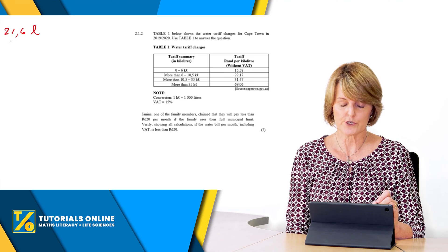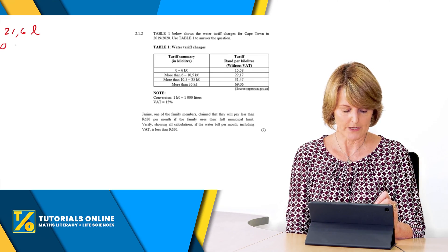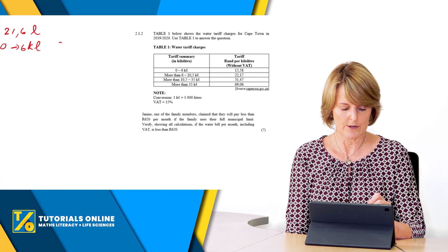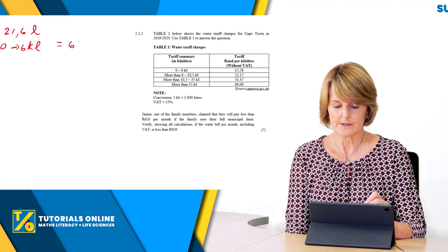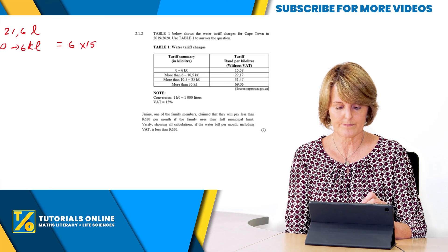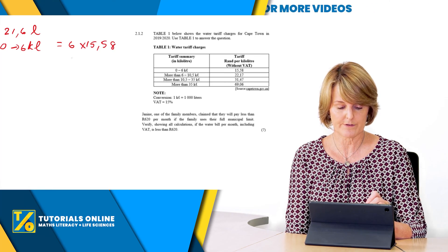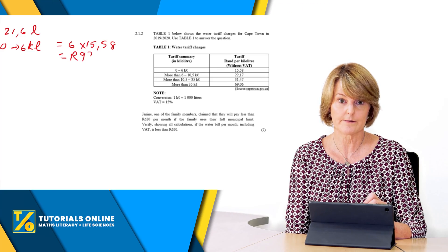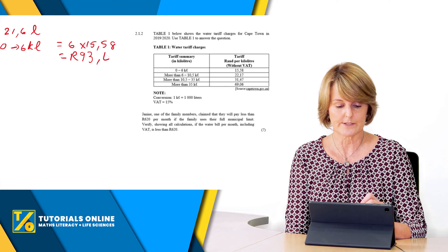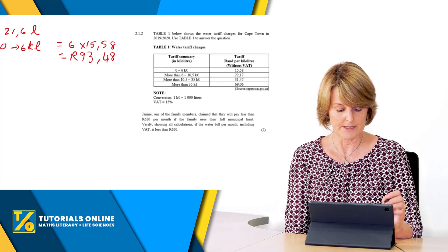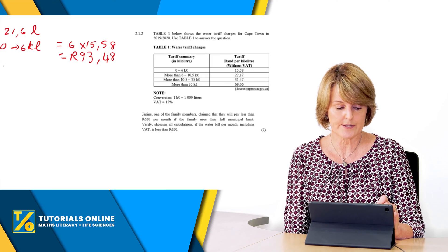So we start off by looking at the first, remember now they used in total 21.6 litres. So we're first going to start with the first category, zero to six kilolitres equals six times 15.58, or 15 rand 58, and we get an answer there of 93 rand and 48 cents. Now that's the first six kilolitres.